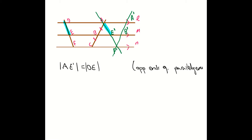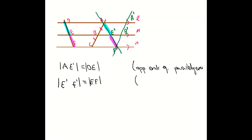Another statement I'm going to make is that the length E dash F dash is equal in length to EF. Looking at the diagram, E dash F dash is equal in length to EF — once again they are opposite ends of that parallelogram. So opposite ends of a parallelogram, because once again we had them as parallel lines.